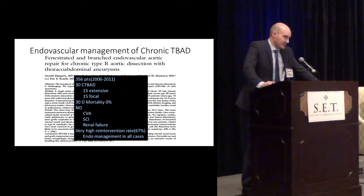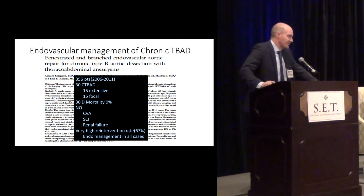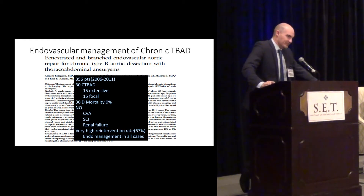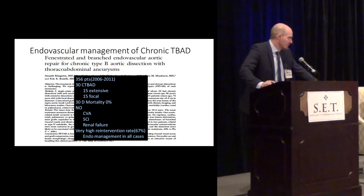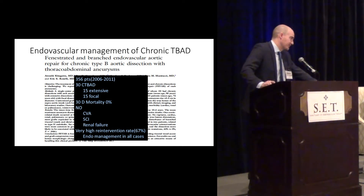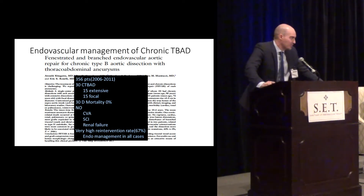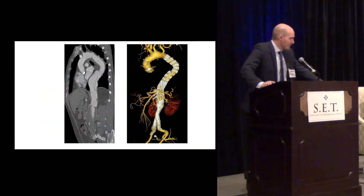Also in endovascular management, with the Cleveland Clinic experience: 356 patients from 2006 to 2011 had chronic thoracic aortic dissection. They have excellent results in perioperative mortality, stroke, spinal cord ischemia, and renal failure. However, they have a very high reintervention rate — 67% of these patients require some type of endovascular repair. And 40% of those patients treated with extensive repair had some connective tissue disorder like Marfan syndrome. Those patients tend to fail more. You can obtain results like this, but these patients require a lot of expertise.